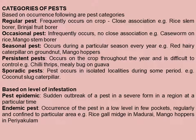Moving on to the categories of pest. Based on occurrence: first, regular pests — they frequently occur on a crop and have a close association with it, such as the rice stem borer and the brinjal fruit borer. Second, occasional pests — they occur infrequently and do not have a very close association with the plant, for example the caseworm on rice and the mango stem borer.